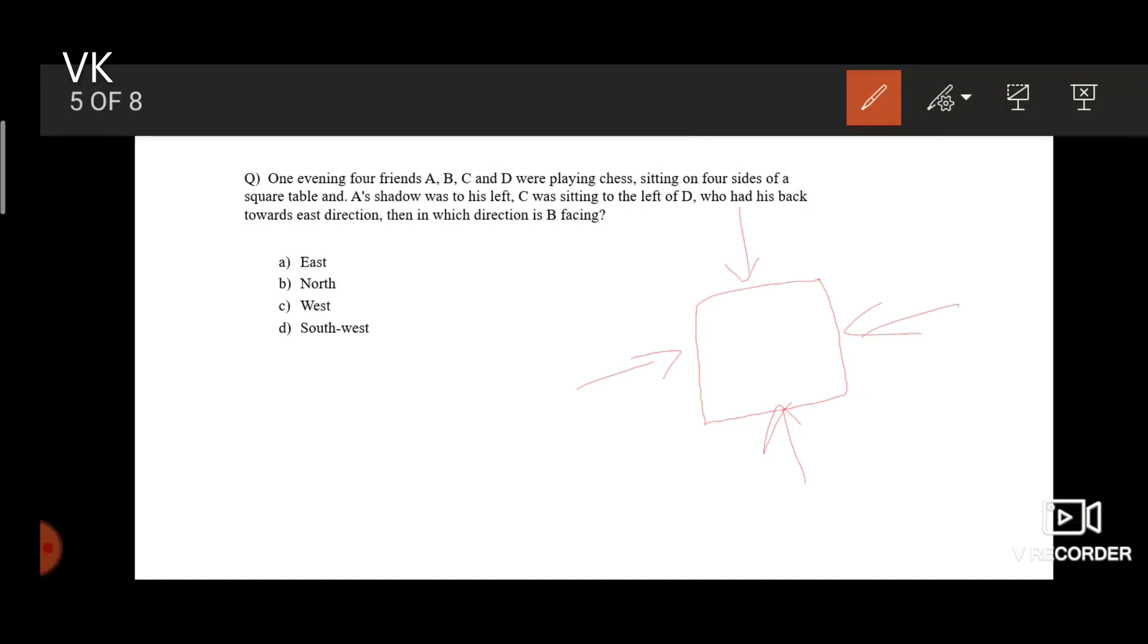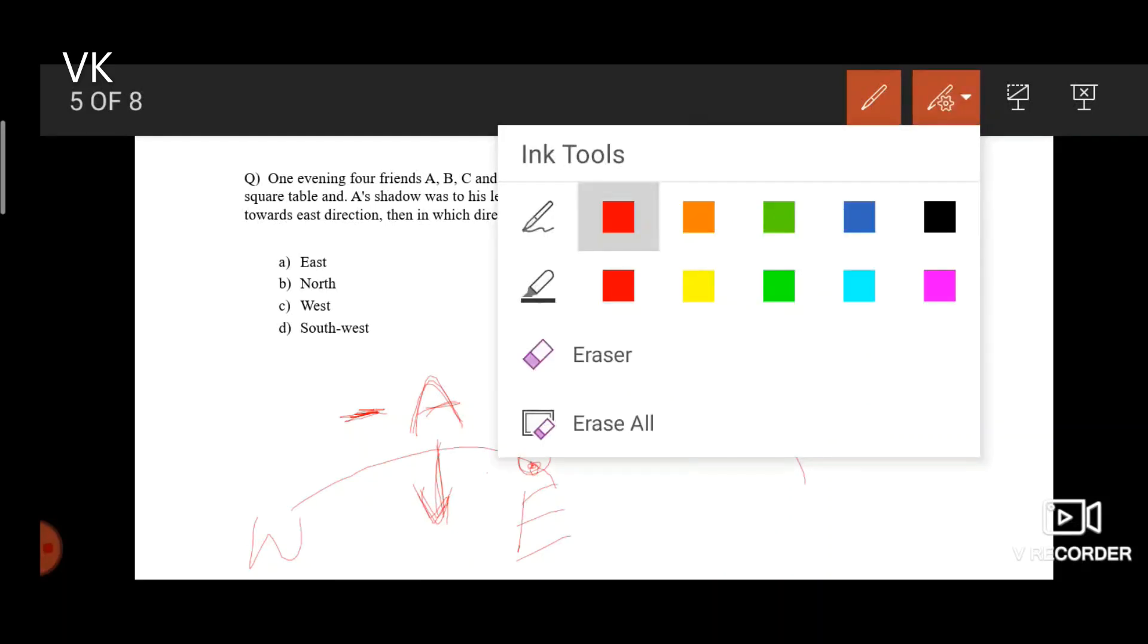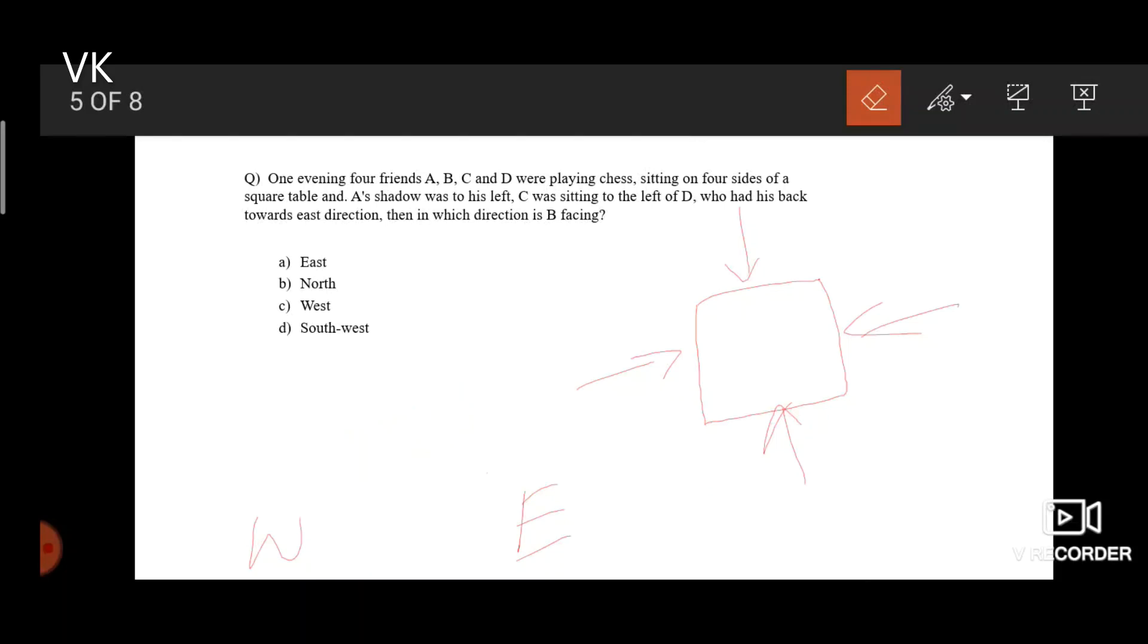A shadow was to his left. Imagine sun rises from east to west. So when it is in the east, suppose A is here, when the sun is in the east, A's shadow will be to his right. Imagine A is facing south direction. And in another scenario, when sun is to the west, A's shadow will be to his left. And there are no other possibilities for this case.